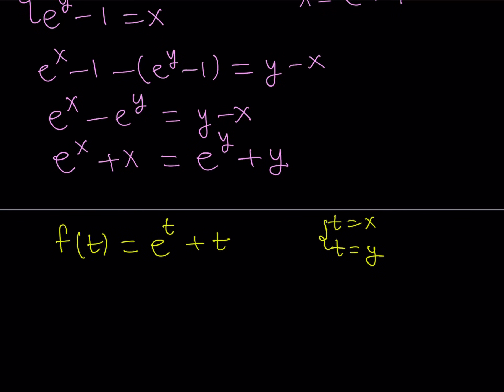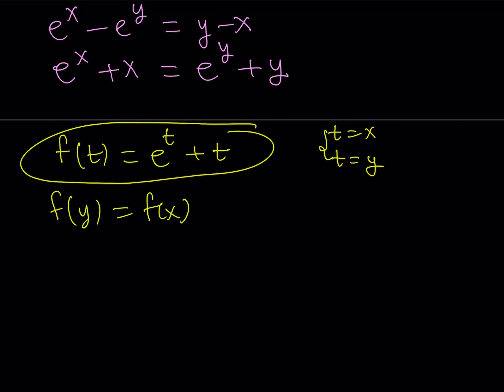All right. Now what happens if we do that? We basically get the equation f of y equals f of x. Now what does that imply? Well, first of all, let's take a look at our function here, which is given by this equation. And let's see if that's going to be a one-to-one function or not.